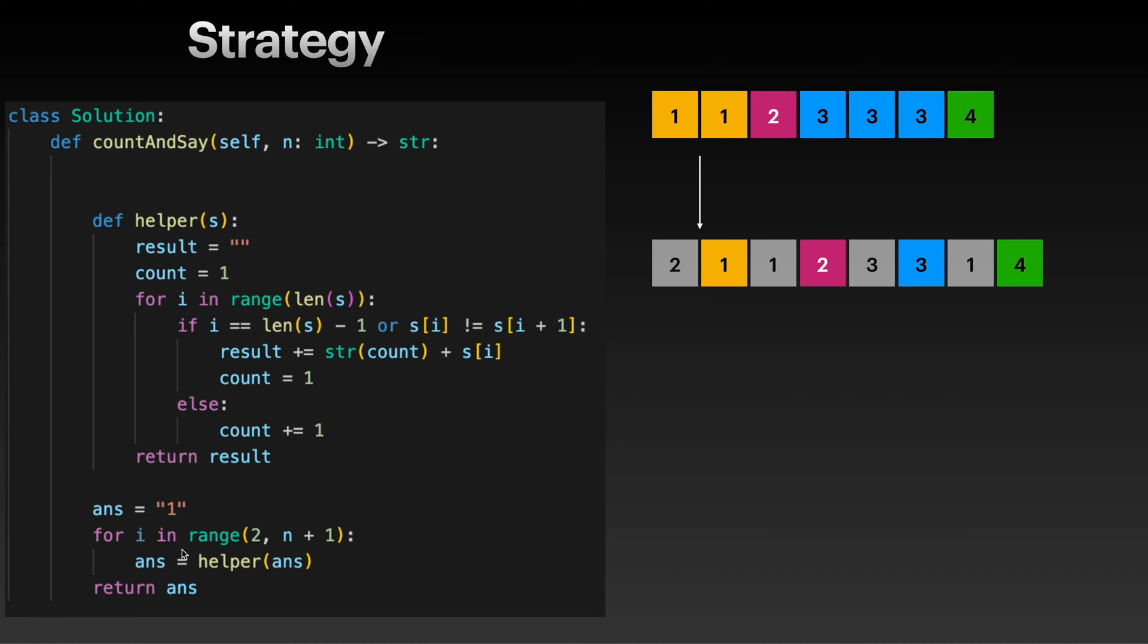Otherwise, for Python, for i in range(2, n + 1) means we are starting i from 2 all the way to n itself, not n + 1. So do not forget about plus 1 here. And then we will be basically - this is our base case and then we will be running our helper function.